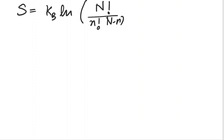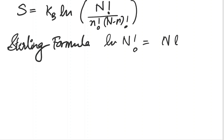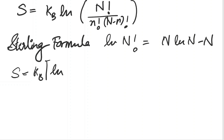So the entropy S becomes k_B times log of N factorial over (n factorial times (N minus n) factorial). We just have to use Stirling's formula, where log N factorial can be written as N log N minus N, and solve all these terms.